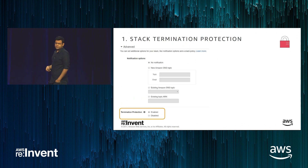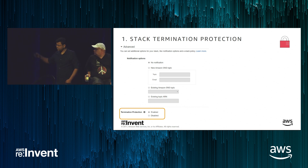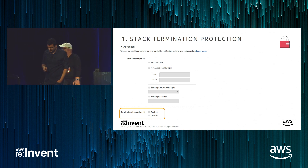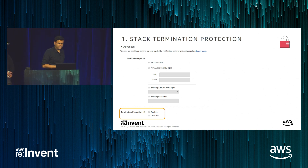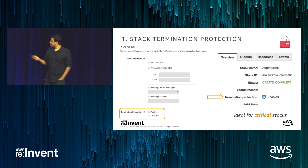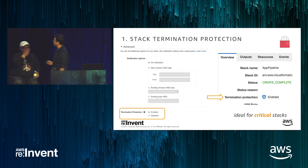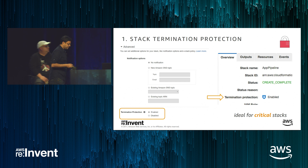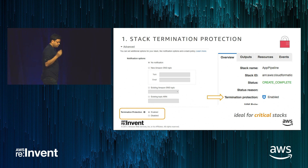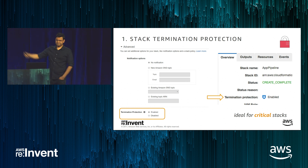The first guardrail is stack termination protection, which we released a couple of months ago. When creating a stack, in the advanced section you'll see a termination protection option with radio buttons. If you enable it, once that stack is created or updated, the overview section will show termination protection as enabled. When you try to delete this stack, your delete API call will fail. You must first disable termination protection and then fire the delete API call in order to delete the stack — it's an extra layer of friction between you and that delete call.